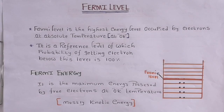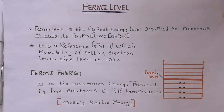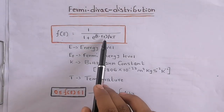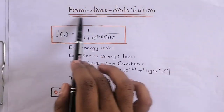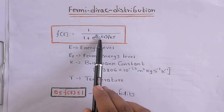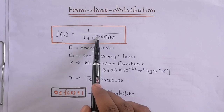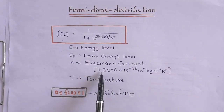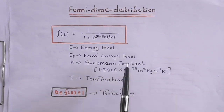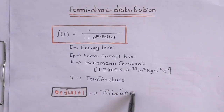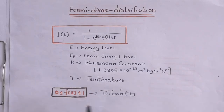Now we will see a mathematical equation to find the probability of finding an electron in an energy level. This equation is given by the Fermi-Dirac distribution function: f(E) = 1 / (1 + e^((E − E_F) / kT)), where E is the energy level, E_F is the Fermi energy, k is Boltzmann's constant (1.3806 × 10⁻²³), and T is the temperature. The function f(E) gives the probability of an electron occupying that energy level, so its value always lies between 0 and 1.